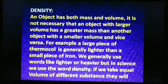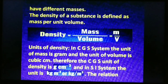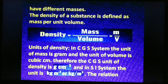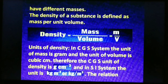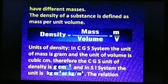If we take equal volumes of different substances, they will have different masses. The density of a substance is defined as mass per unit volume. In the CGS system, the unit is gram per centimetre cube, and in the SI system the unit is kilogram per metre cube.